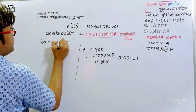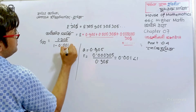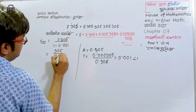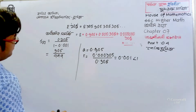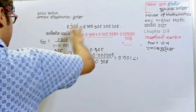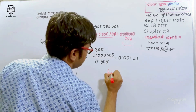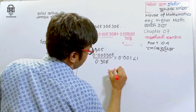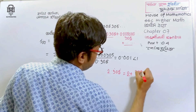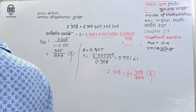0.305 divided by 1 minus 0.001 — the whole is 305 divided by 999. About 0.001. So 305 is equal to 2 plus 305 divided by 999. This is our answer.